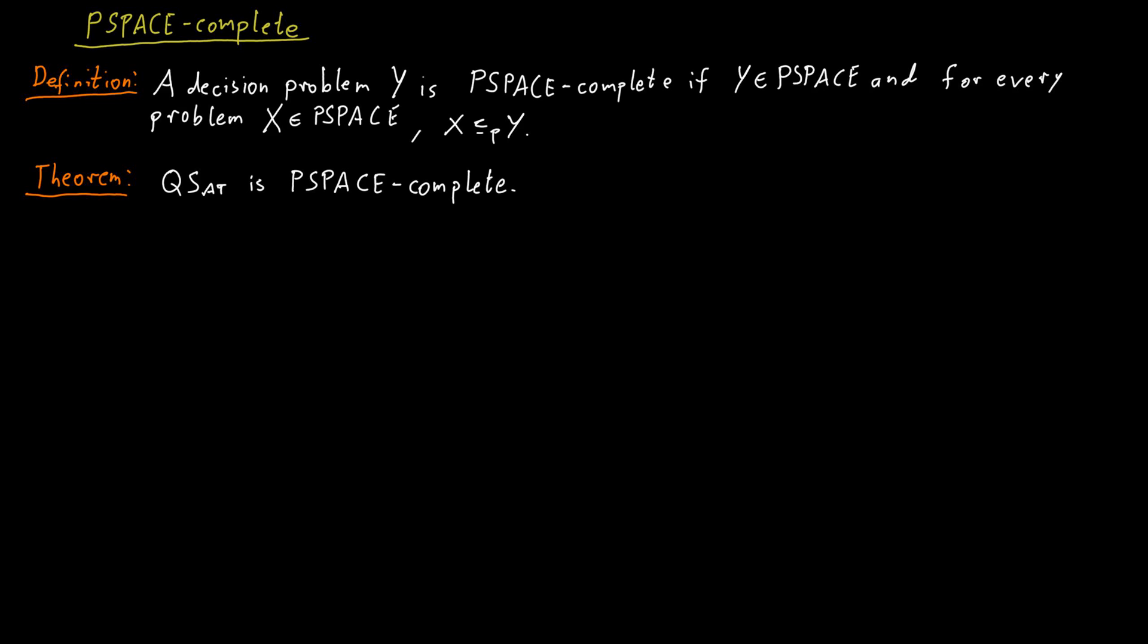We will not show the reduction here. If you're really interested, you can read about it, but you don't necessarily have to. Just remember that Q-sat is P-space complete. It takes the same role as satisfiability does for NP-completeness.